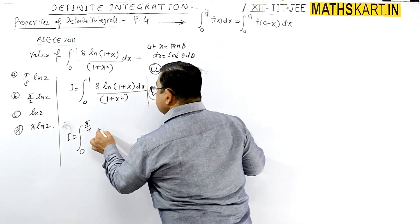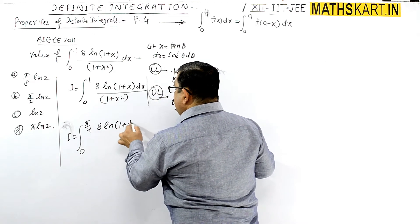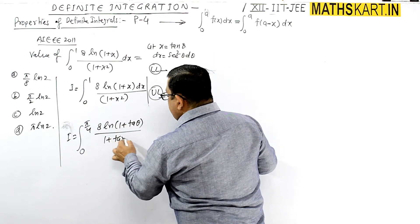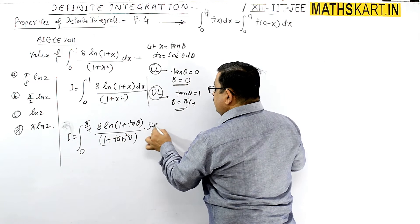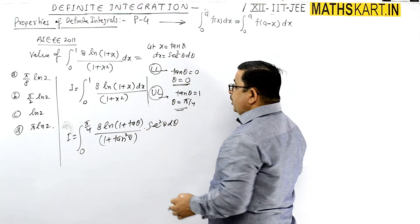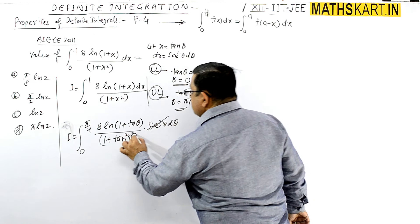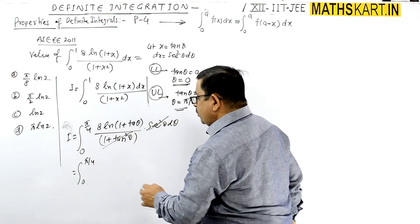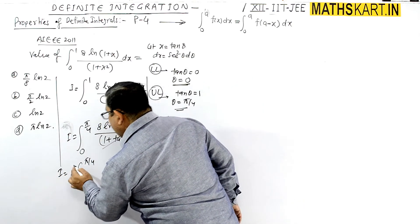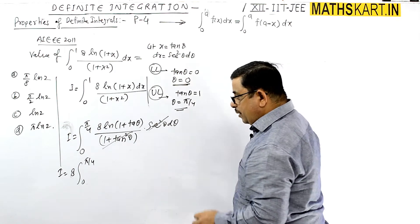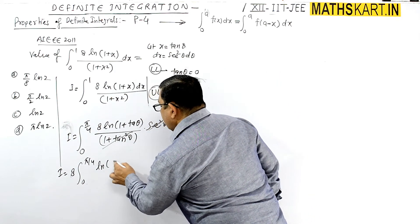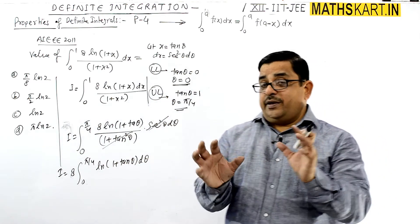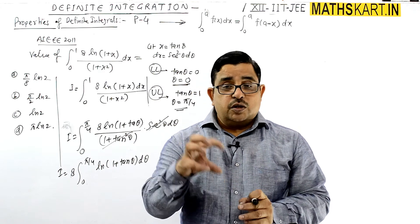After substitution the integral becomes i equals 8 times the integral from 0 to pi by 4 of ln(1 plus tan theta) d theta — since 1 plus tan squared theta (which is sec squared theta) cancels with the sec squared theta from dx. At this point, Property 4 is best used to proceed further.